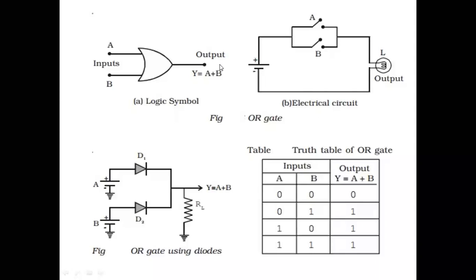OR gate performs addition: Y = A plus B. Truth table has four conditions: 0,0 → 0; 0,1 → 1; 1,0 → 1; 1,1 → 1. Three conditions give output 1. OR gate using switch or OR gate using diode — the truth table is the same.